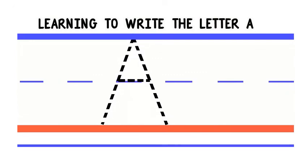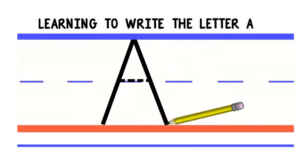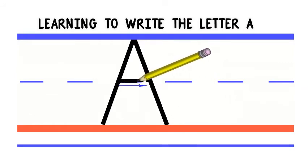To write uppercase A, we'll start at the top. Then we'll go down like this. Then go back to the top and go down again the other way. Lastly, we'll go to the middle and go straight across. Good job!